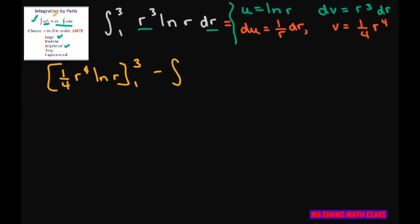Let's finish it up. We're going to write V times dU: 1 fourth R to the fourth times 1 divided by R dR. I'm going to clean this up and bring out the one-fourth. Then this is just R cubed from 1 to 3 dR.